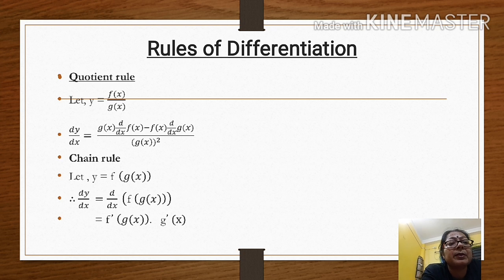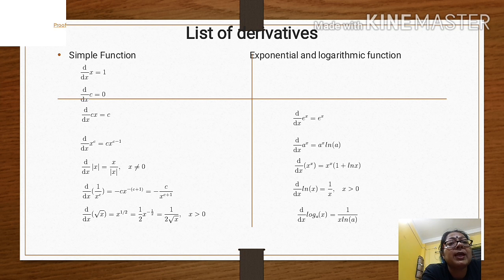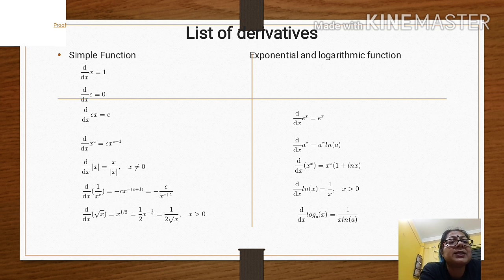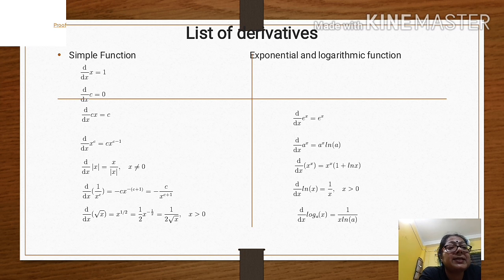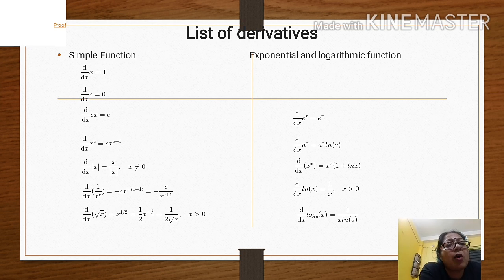Before solving the problems, let's check some derivatives you have done in Class 11. The derivative of x is 1. The derivative of any constant is 0. The derivative of c times x is c. The derivative of x to the power n is n times x to the power n minus 1. The derivative of modulus x is x by modulus x, which is either plus 1 or minus 1 depending on the sign of x.